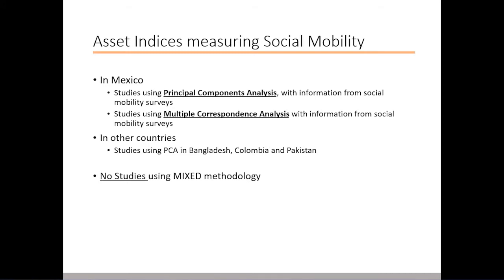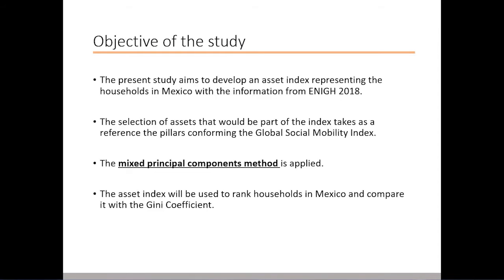However, there are no studies detected that have built an asset index using a mixed principal components methodology combining numerical and categorical variables. Derived from this, the present study aims to develop an asset index representing the households in Mexico with information from ENIGH 2018. The selection of assets takes as a reference the pillars of the Global Social Mobility Index, and the mixed principal components method is applied. Additionally, the asset index will be used to rank households in Mexico and compare it with the Gini coefficient.